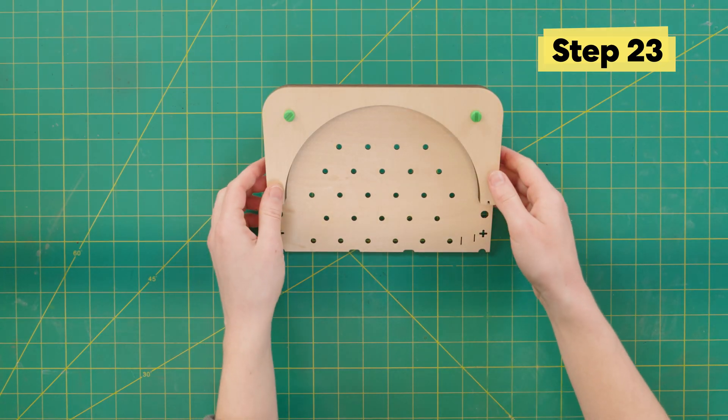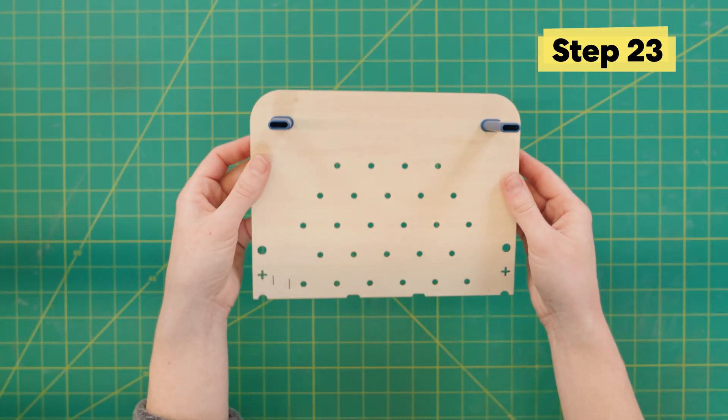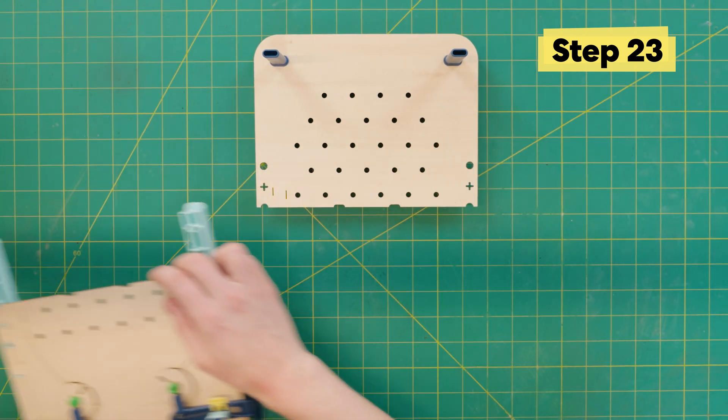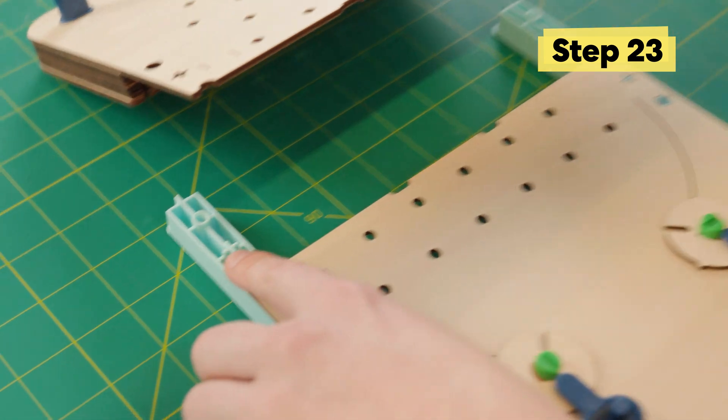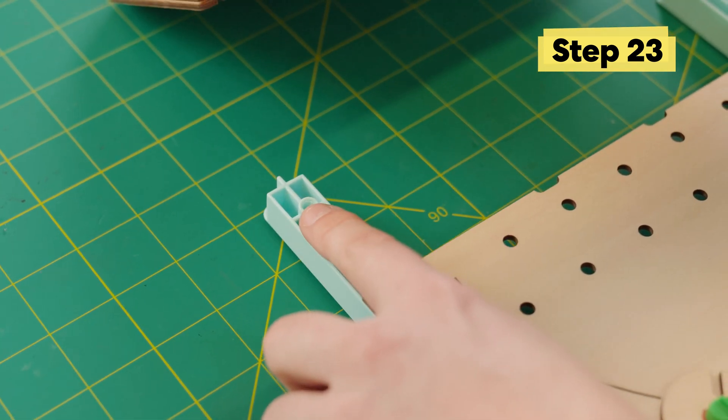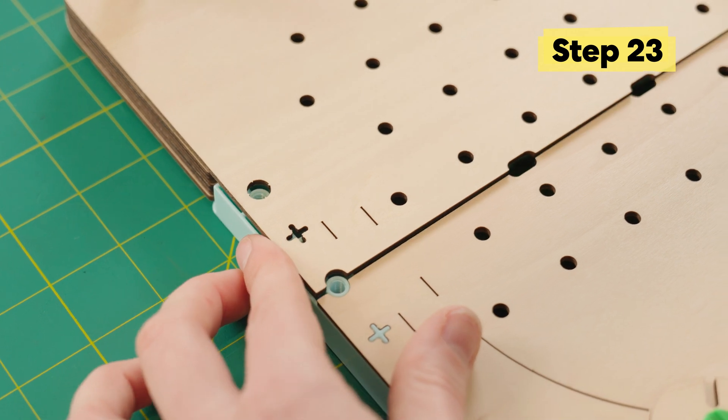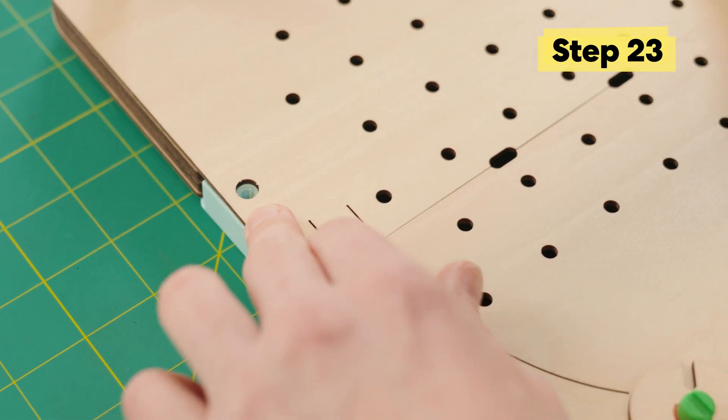Now to put everything together. With both halves flipped over, go ahead and line up those plus signs and circles. Everything should press together nice and snug.